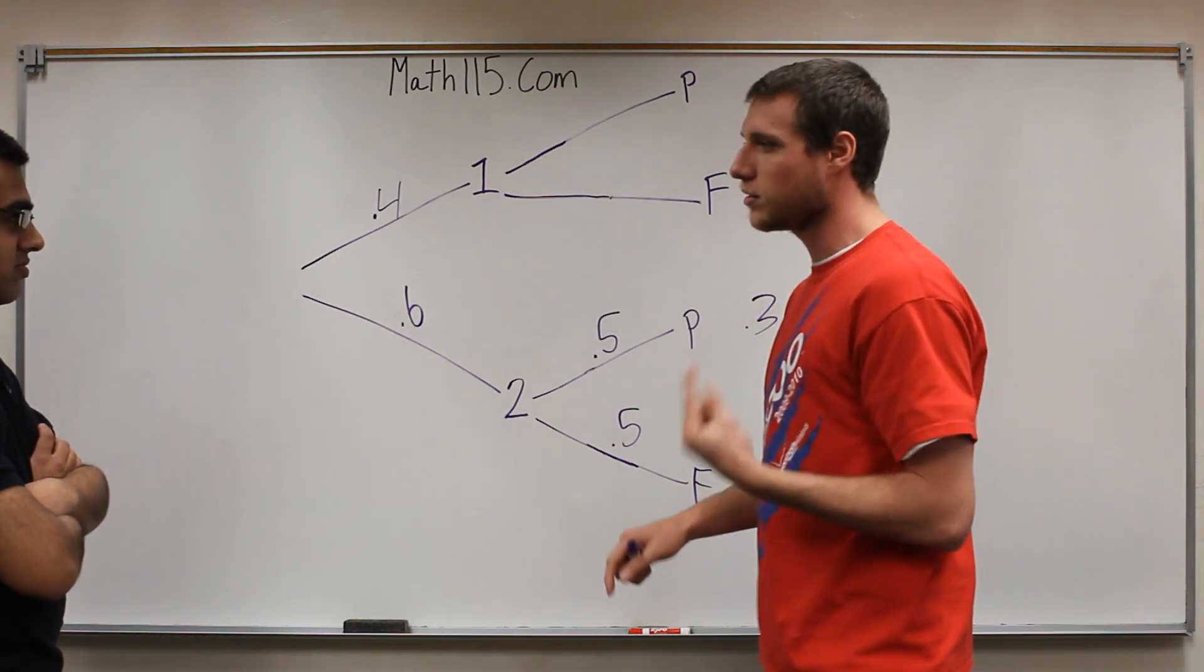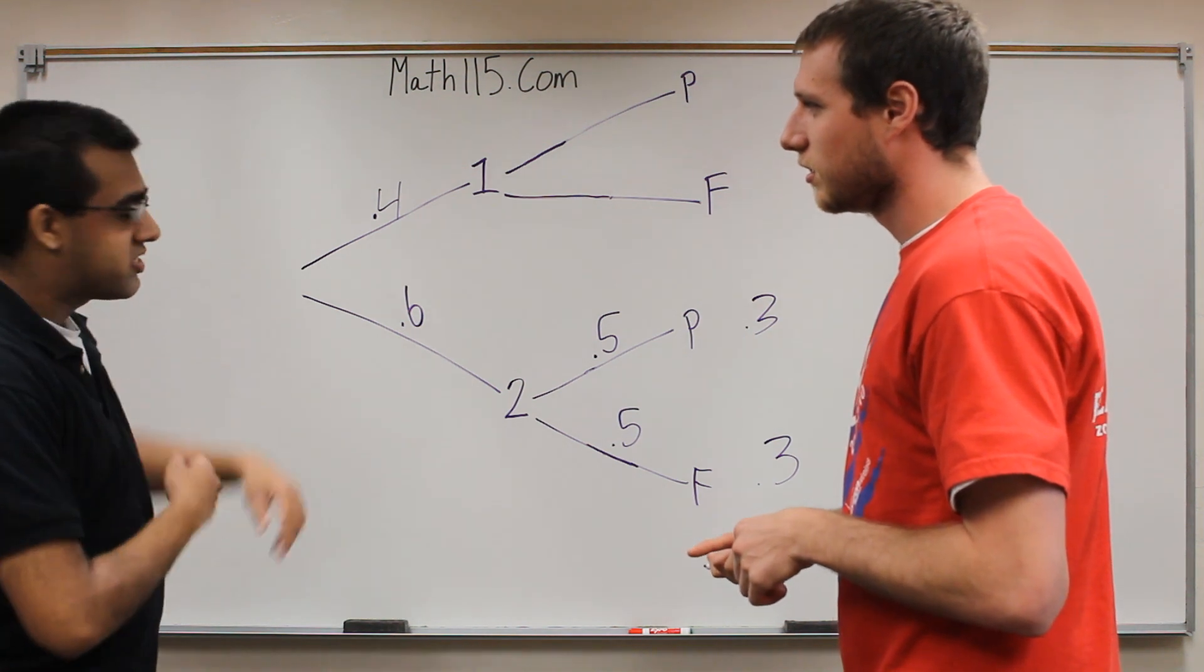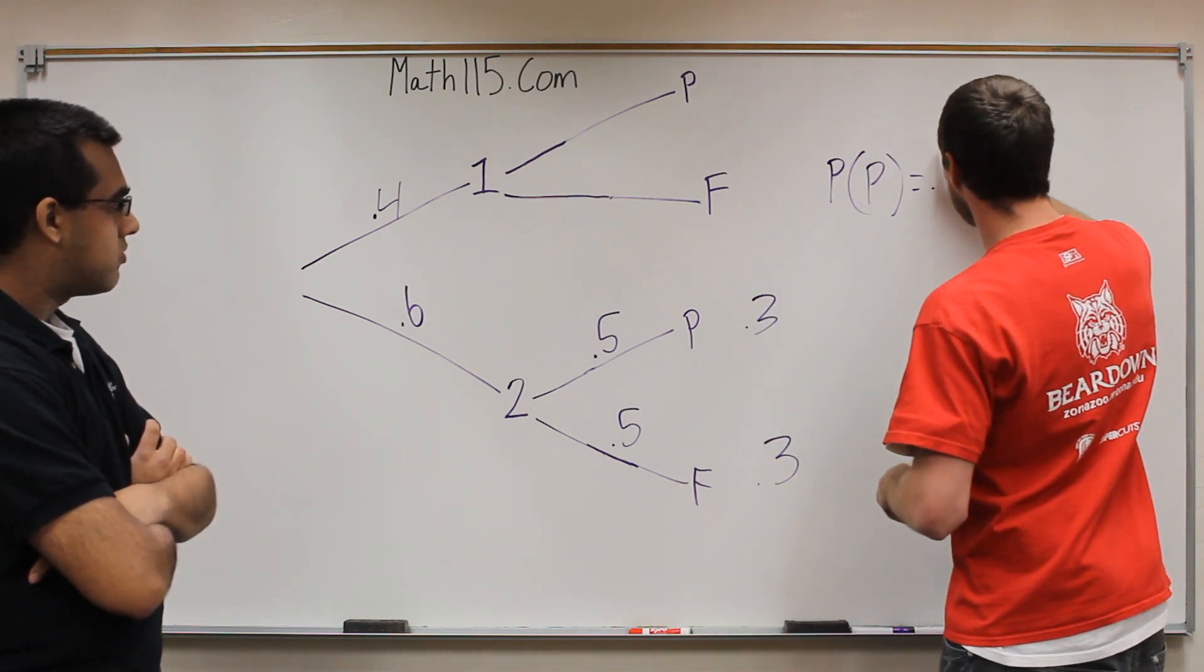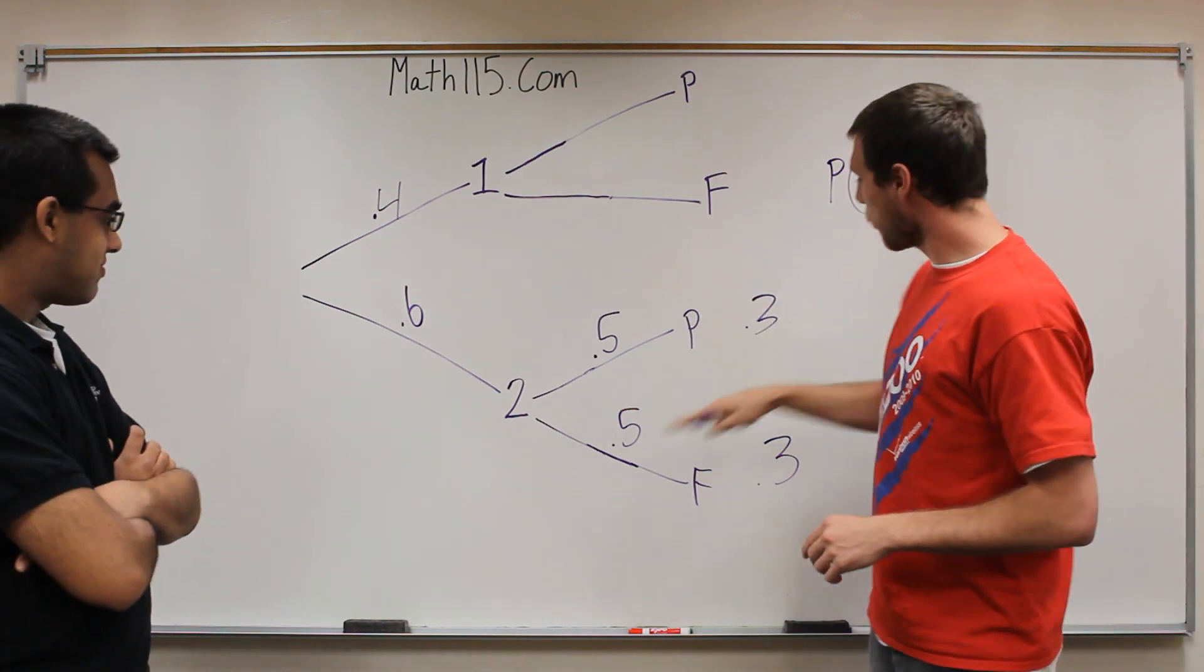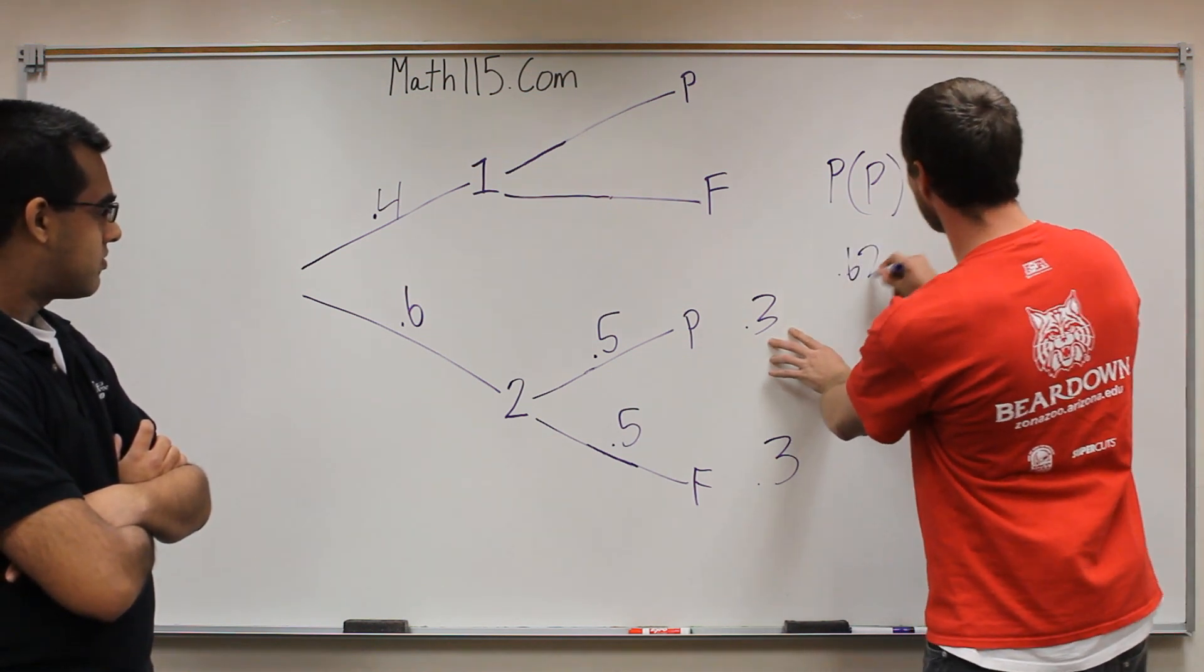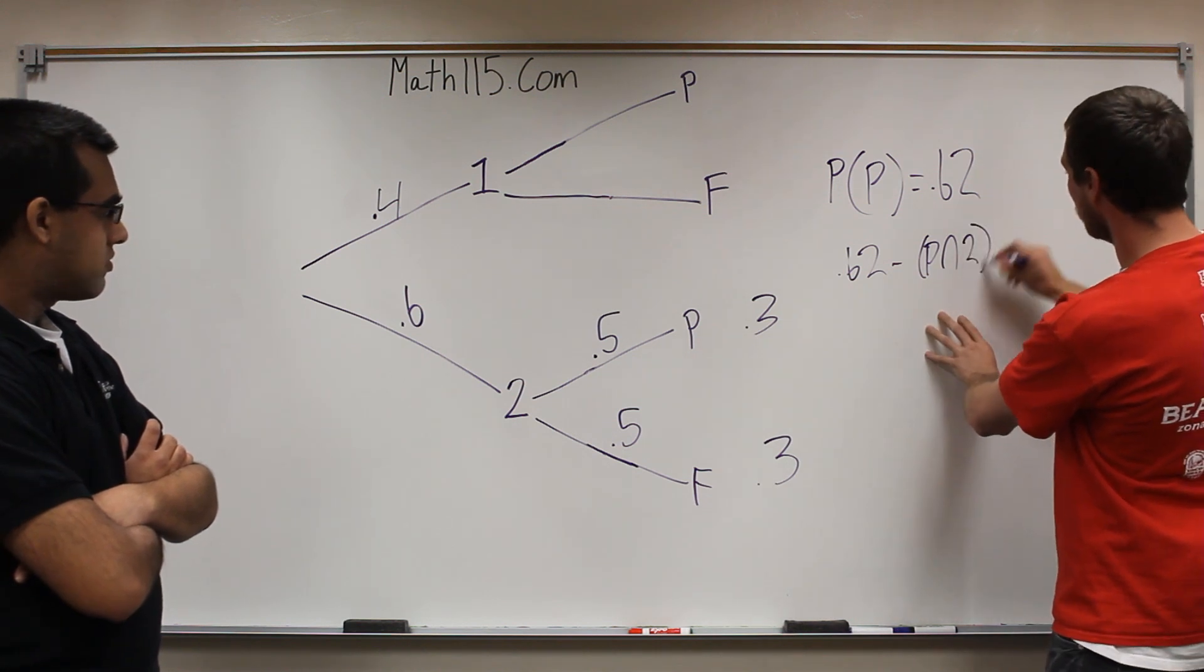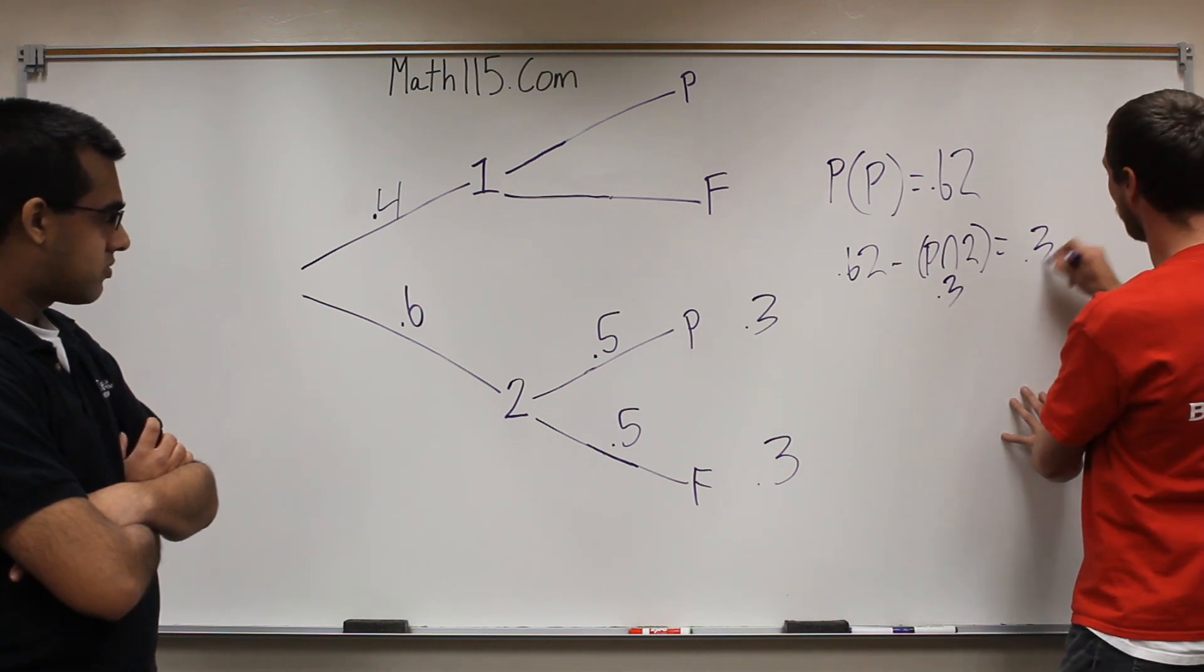Now we were given one other piece of information, but first I think we should go ahead and solve through this so we can see what numbers we're working with. So here we're going to have 30% students that pass in section 2, and 30% of section 2 students are going to fail. Now we were given one more piece of information. It said that 62% of all students in both sections are going to pass. So the probability that a student passes is equal to 62%.